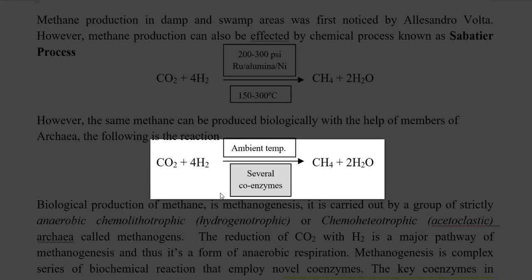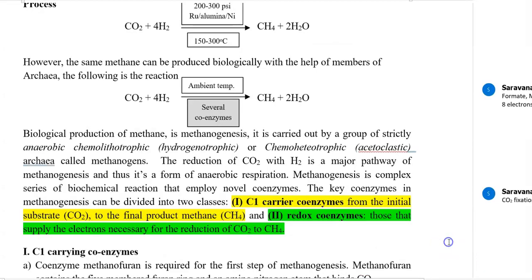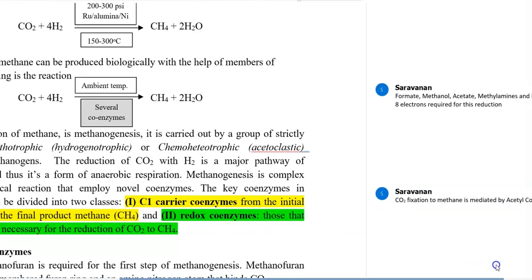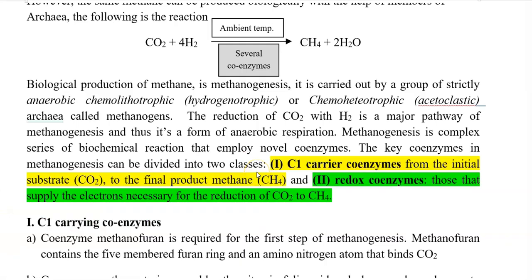As it is a biological process, it does not require high temperature or pressure to combine hydrogen with carbon dioxide to produce methane. The carbon can come from different sources — carbon dioxide, formate, methanol, acetate, or methyl amine. These are the substrates which can supply carbon for conversion to methane. For the total process of this conversion, 8 electrons are required for reduction of carbon into methane.